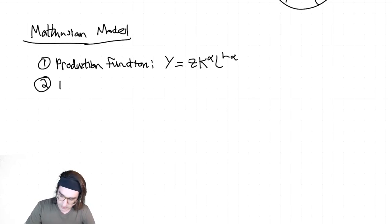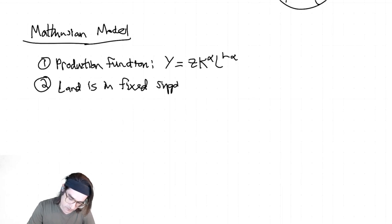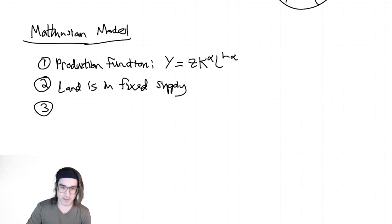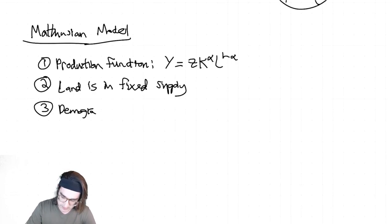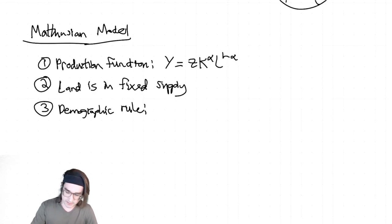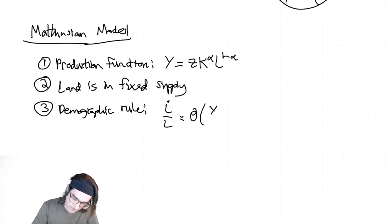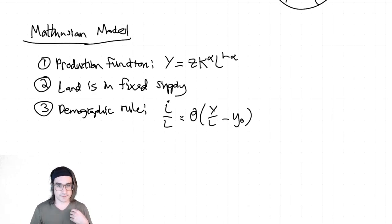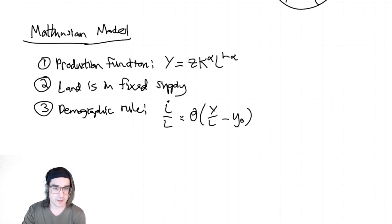The second assumption is that land is in fixed supply. Obviously there's a lot of land and most of it isn't really populated, so we'll go through that. The third assumption is this demographic rule, which tells us how population is actually growing. It's not founded on any optimization or choosing how many kids to have — it's just asserted. The assumption is: the more output you have, the higher the standard of living, the more population growth you have.